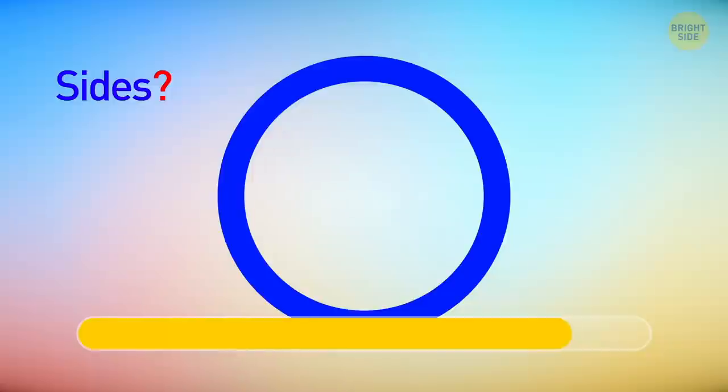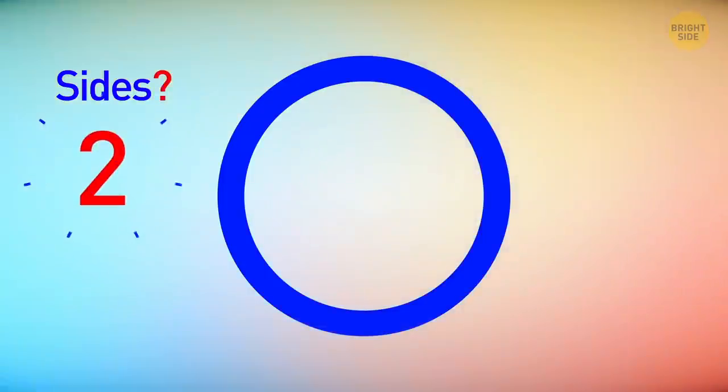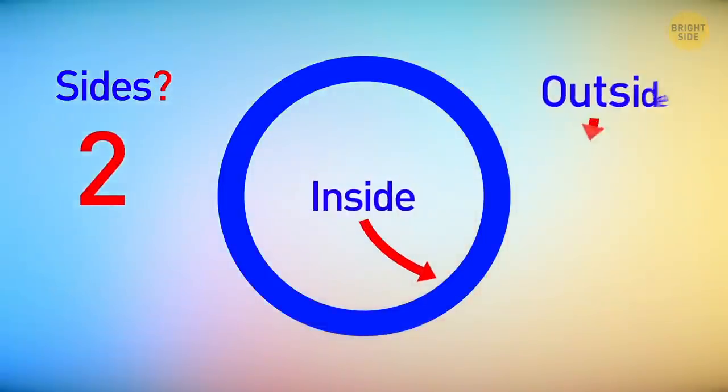Alrighty, it's Math O'Clock here, and I have a couple of fun riddles for you to solve. Let's start with a cheesy one. Here's a circle. How many sides does the circle have? There are two. The inside and the outside.